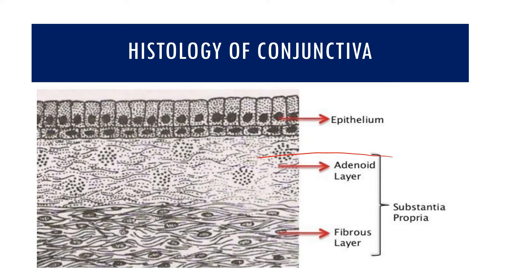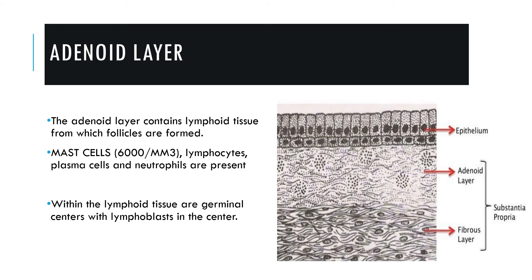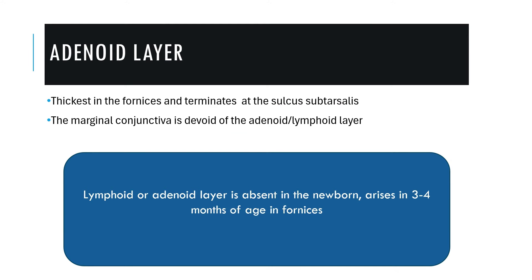The adenoid layer, also called the lymphoid layer, contains lymphoid tissue with follicles, mast cells, lymphocytes, plasma cells, and neutrophils. Within this lymphoid tissue you can see germinal centers with lymphoblasts. The adenoid layer is thickest in the fornicial area and terminates at the level of sulcus subtarsalis, so the marginal conjunctiva does not have any adenoid or lymphoid layer. Importantly, the lymphoid layer is absent in newborns and only arises after three to four months of age in the fornices.